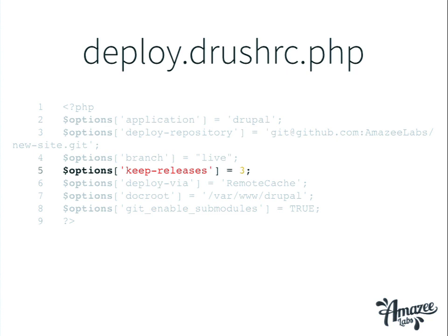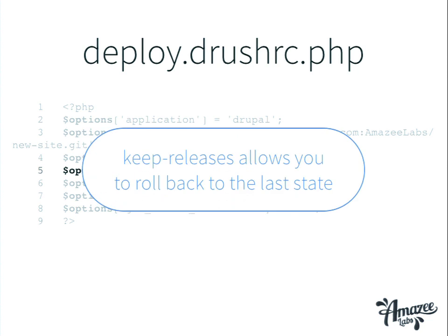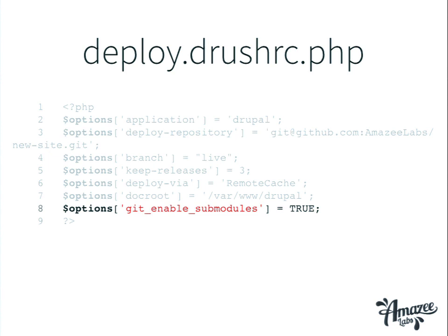There's something else in the deploy.drushrc.php: keep releases. Keep releases tells Drush Deploy how many release directories it should keep — that's the steps you can go back to for rollback. When you have 10, you can go back 10 steps in deployments. It doesn't clean up automatically, so when you run drush deploy cleanup it will remove everything over that threshold. And if you use Git submodules, you need to set git_enable_submodules to true so it knows to check out your submodules.